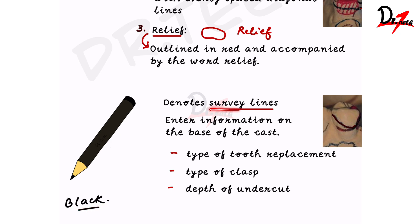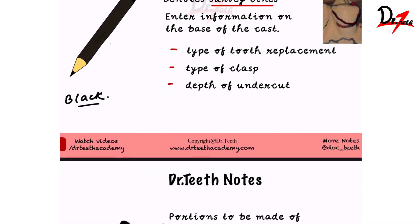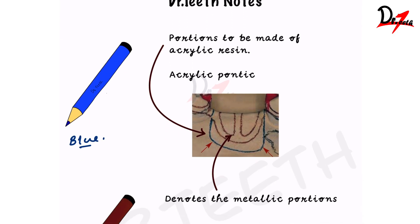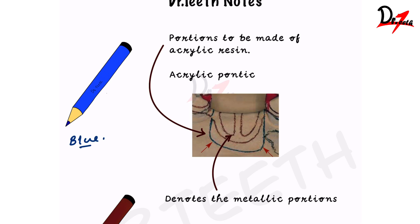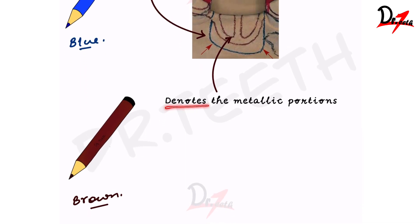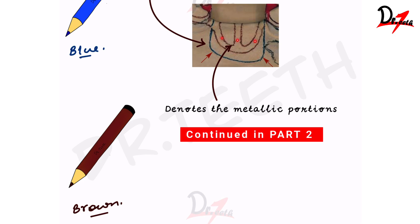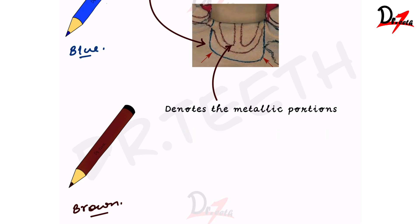Black denotes the survey lines — we use black to draw the various types of survey lines on the cast. Black is also used to enter information on the base of the cast, such as the type of tooth replacement, the type of clasp needed, and the depth of the undercut. Blue indicates the portions to be made of acrylic resin — it shows how far the acrylic, which is the pink part of the denture, will extend. Brown denotes the metallic part, so any design drawn in brown represents the metallic framework of the cast partial denture.